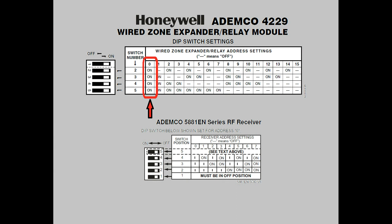And of course, since we can't have something being too simple, there'll be a little complexity involved. For example, the 4229 says address 0 — all dip switches are on. Whereas the 5881 module says address 0 — set all dip switches to off. This little anomaly is caused by what we call positive logic versus negative logic, and I'll discuss that in my next video. Well, thanks for watching.